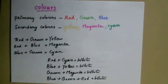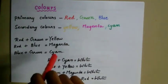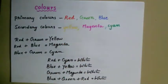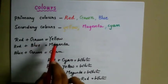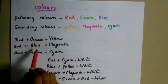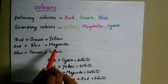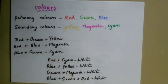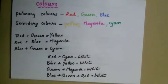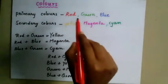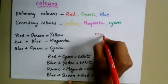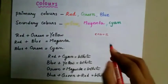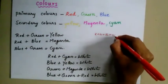Let's see the colors. Primary colors are red, green, and blue. Secondary colors are yellow, magenta, and cyan. If primary colors red and green are mixed, we will see yellow. Red and blue give magenta, and blue and cyan are seen together. With all three colors combined, we will see white light — R plus G plus B gives white color.